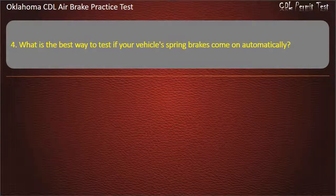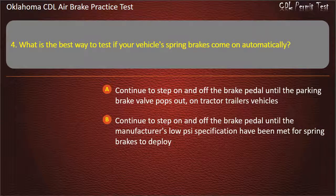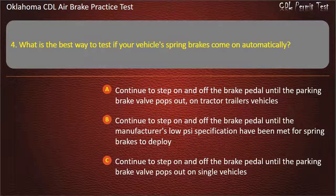Question 4. What is the best way to test if your vehicle's spring brakes come on automatically? Continue to step on and off the brake pedal until the parking brake valve pops out on tractor-trailer vehicles; continue to step on and off the brake pedal until the manufacturer's specification have been met for spring brakes to deploy; or continue to step on and off the brake pedal until the parking brake valve pops out on single vehicles.